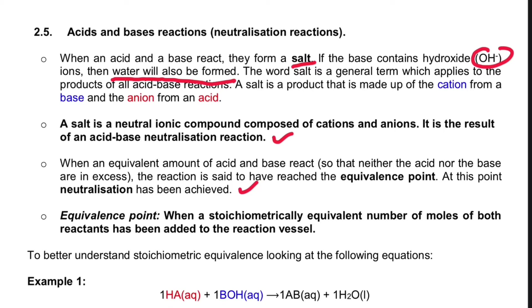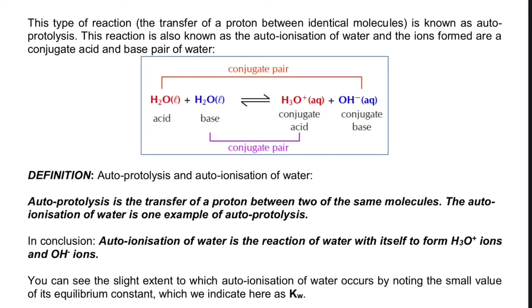There is something profound about H2O. Take a look at this reaction: H2O plus H2O. One H2O will act as an acid and the other will act as a base, and consequently we get H3O⁺ and OH⁻. So H2O + H2O gives us H3O⁺ + OH⁻. This is what we call auto-protolysis — the transfer of a proton between two of the same molecules.